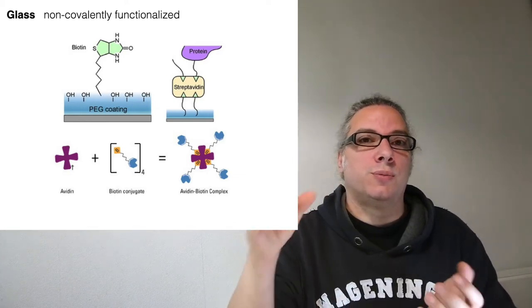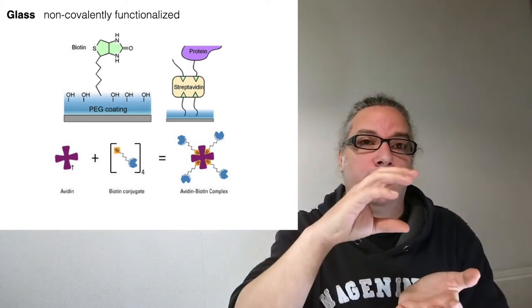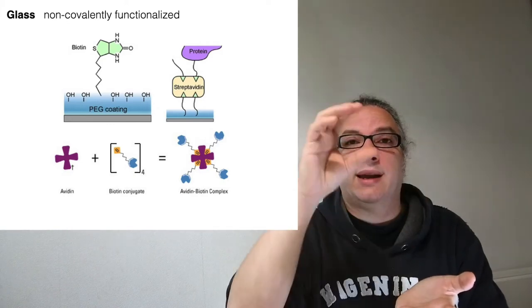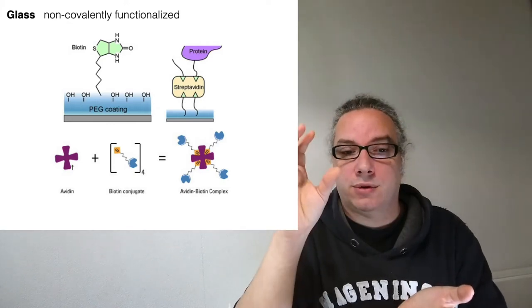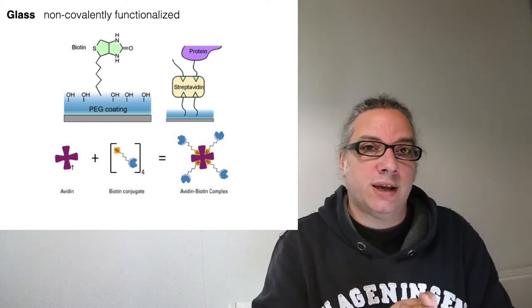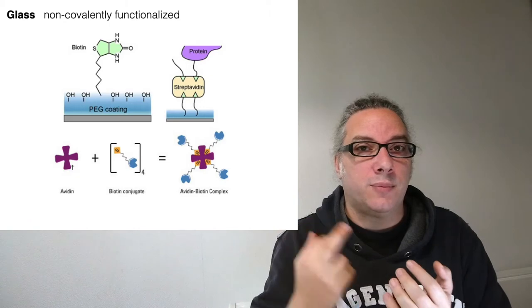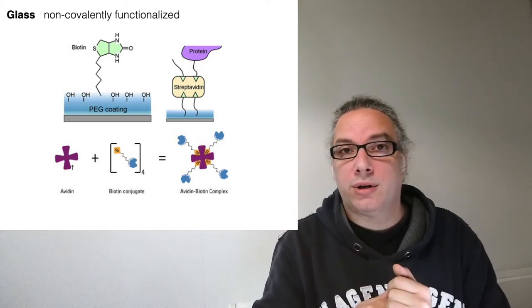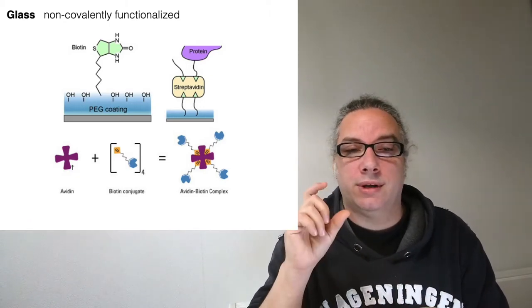So what do you do? You put biotin on surface, then you flow streptavidin on top, and then I can use whatever other ligand I want on top of the surface. And this is most of the case used, for example, for binding proteins or any other biomolecules which can be tagged with the biotin.